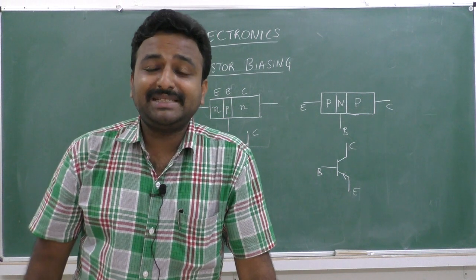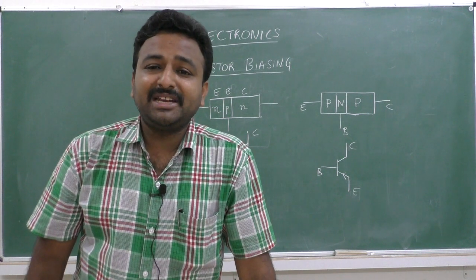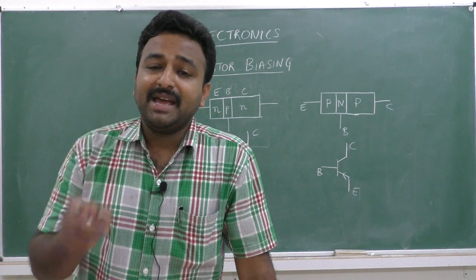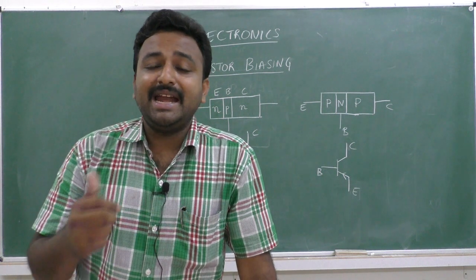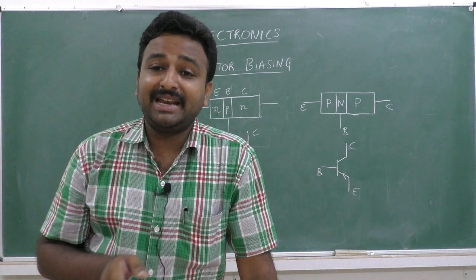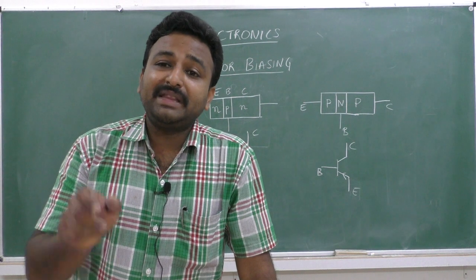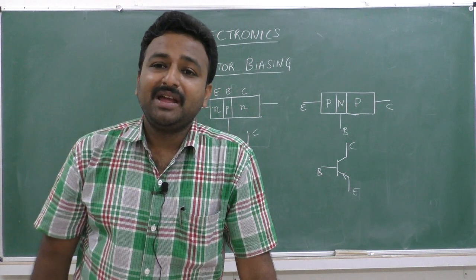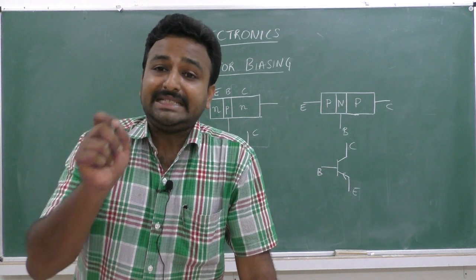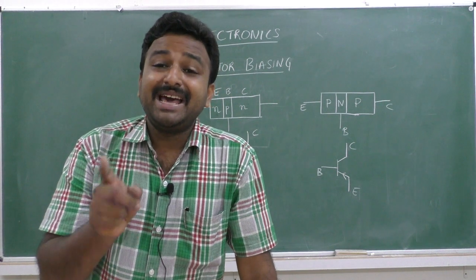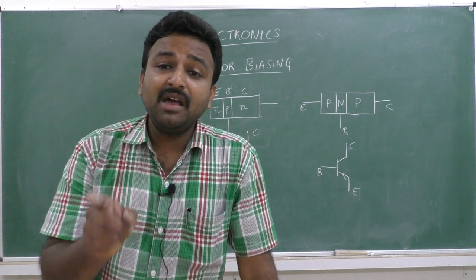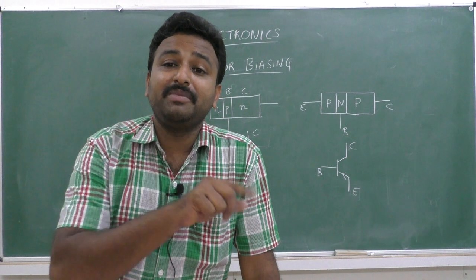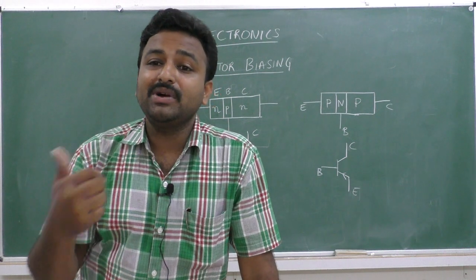The collector region is a large-sized region with a moderate level of doping. Since it is doped with a moderate concentration, it is capable of collecting more number of majority charge carriers. The base region exists between the emitter and collector and is doped with a low level of doping concentration. The base region regulates the flow of majority charge carriers from emitter to collector.